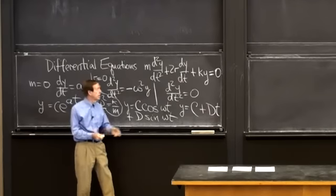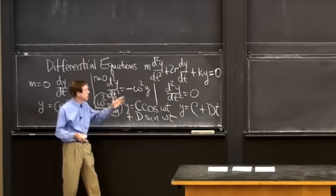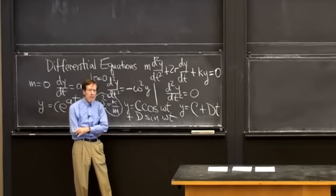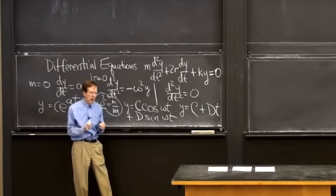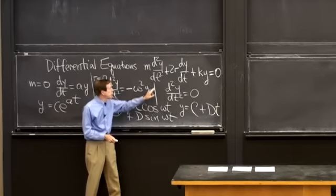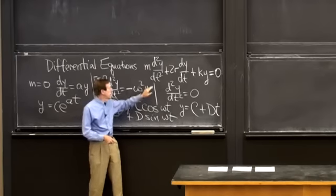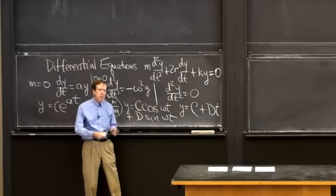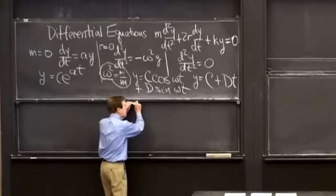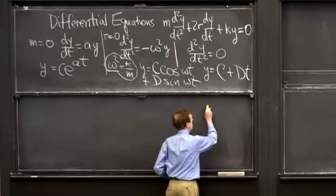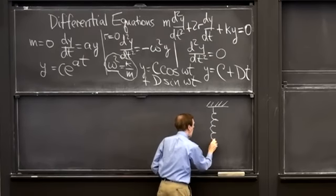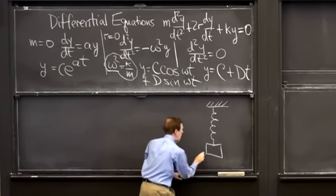This equation — my y'' + 2r·y' + k·y = 0 — is a fundamental equation of engineering. Let me draw a picture to show why I'm using t rather than x, because things are happening in time. What's happening is typically a problem with a spring hanging down with a mass m attached.